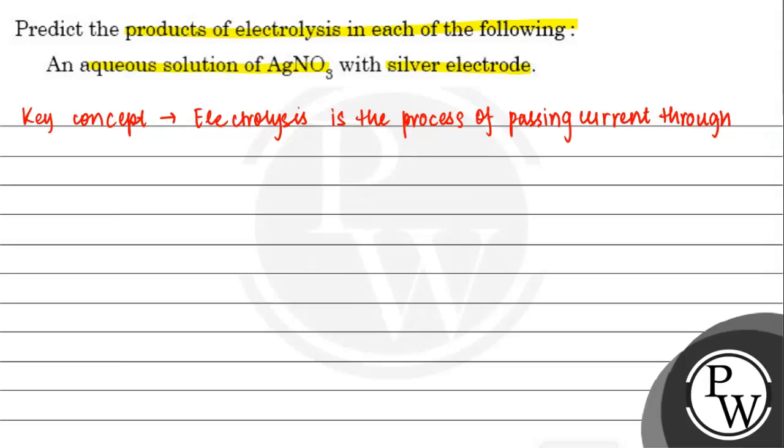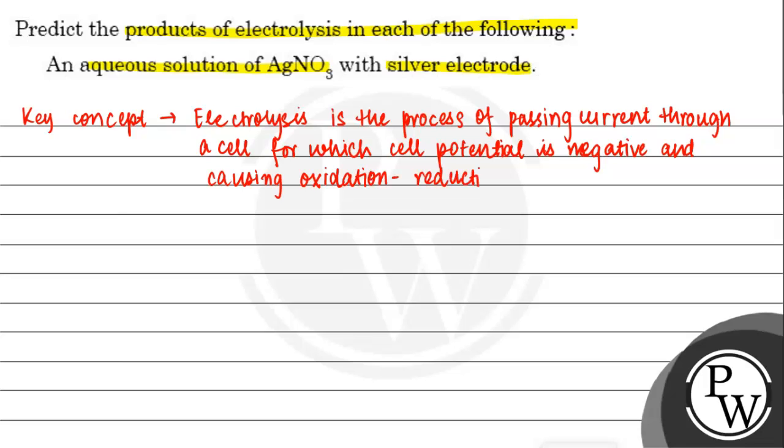through a cell for which cell potential is negative, and this is the process of causing oxidation and reduction to occur.